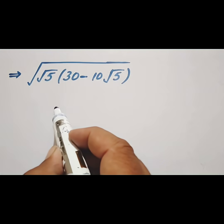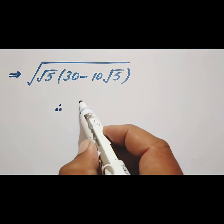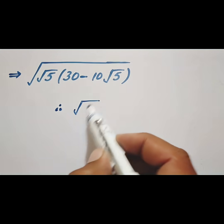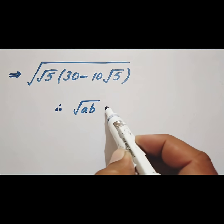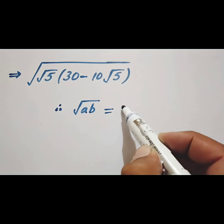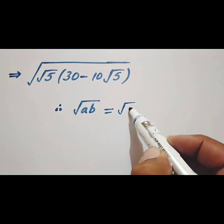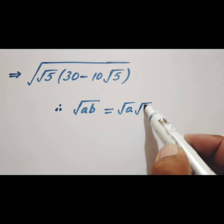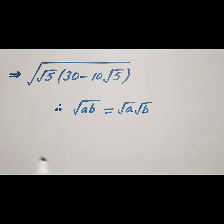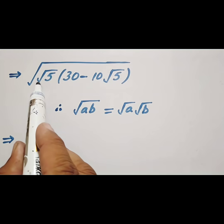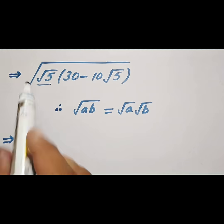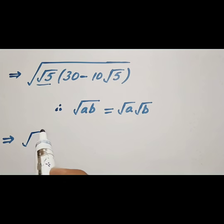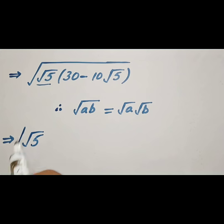As we know that the square root of a times b is equal to square root of a into square root of b. So the square root of 5 whole square root can be written as square root of 5 times square root of 5.